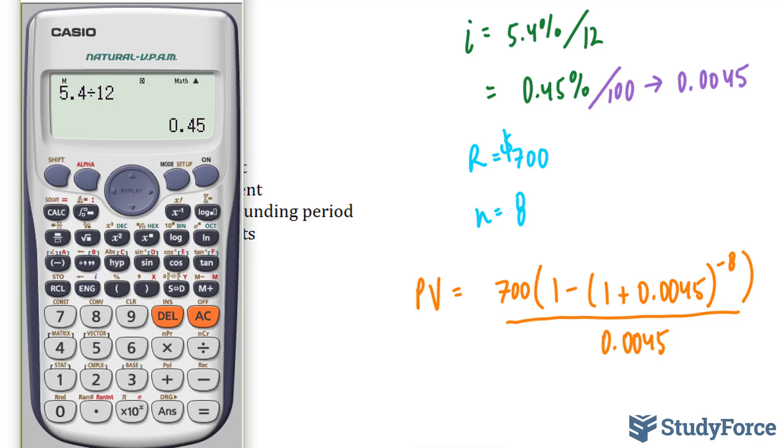Now we're going to plug this into our calculator. I'm going to start with the top part, 700 times 1 minus bracket 1 plus 0.0045 to the power of negative 8, close that bracket, divided by the number at the bottom, 0.0045.